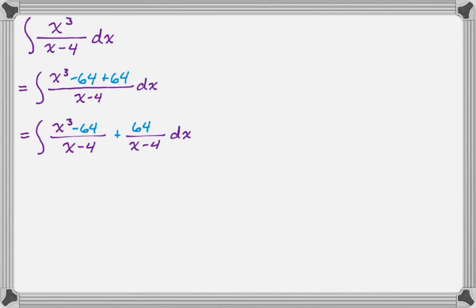So 64 over x minus four, I can integrate right away. So I'm going to do that in the next step, but I also can factor x cubed minus 64. So I need to factor a difference of cubes. So if you remember, if we have a cubed minus b cubed, that's going to be equal to a minus b, and then a squared plus ab plus b squared. So that's what it's going to factor into.